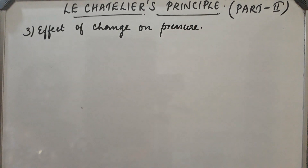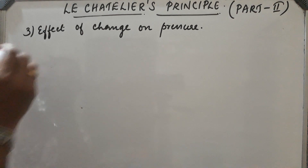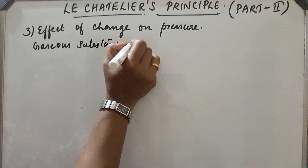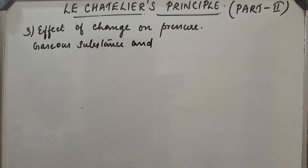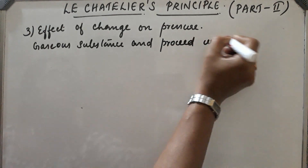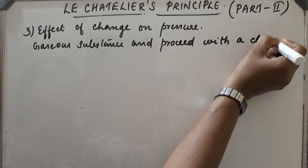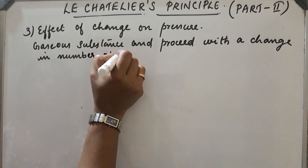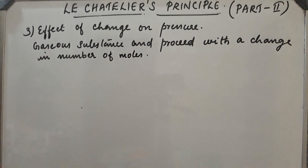What happens if there is a change in pressure in an equilibrium state? The change of pressure has effect only on those equilibria which involve gaseous substances, and also those which proceed with a change in number of moles. This is important — change in number of moles.